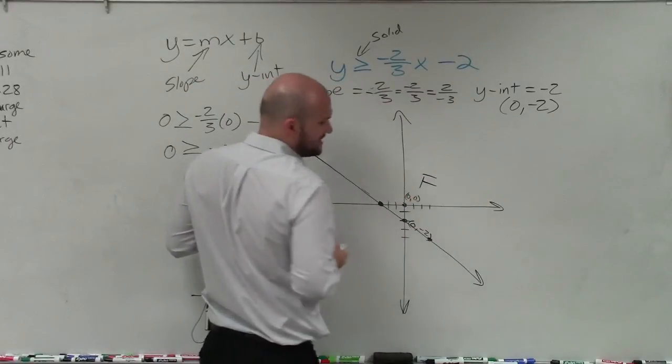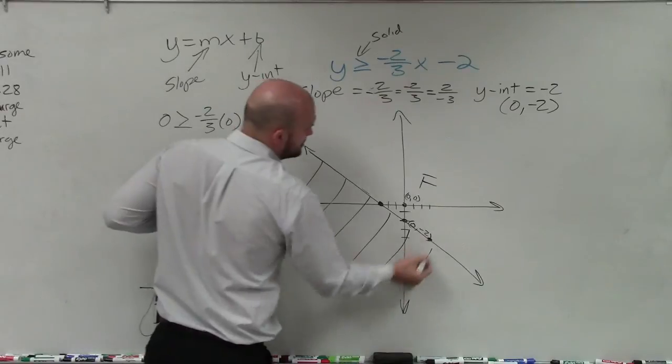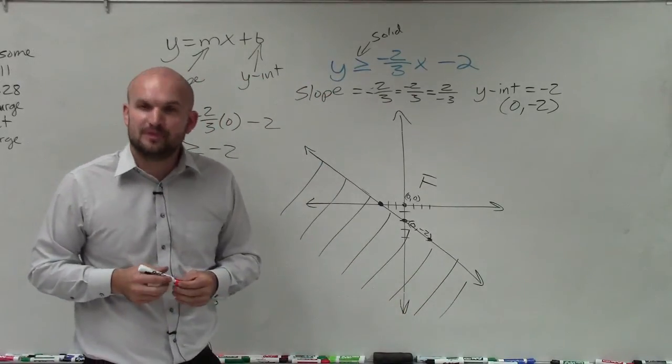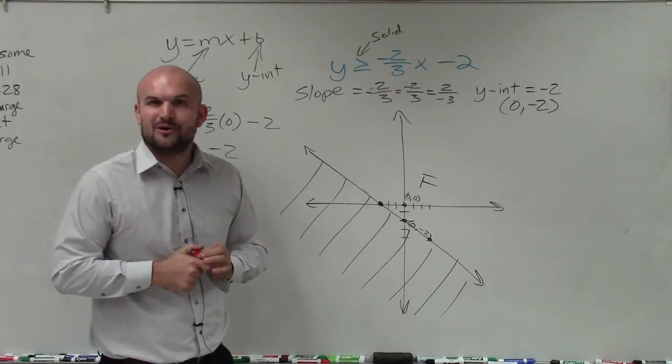So since my test point is false, that means all the points above the line are going to be false, and all the points below the line are going to be true. So that is why we shade below the line. There you go, ladies and gentlemen. That is how you graph your linear inequality. Thanks.